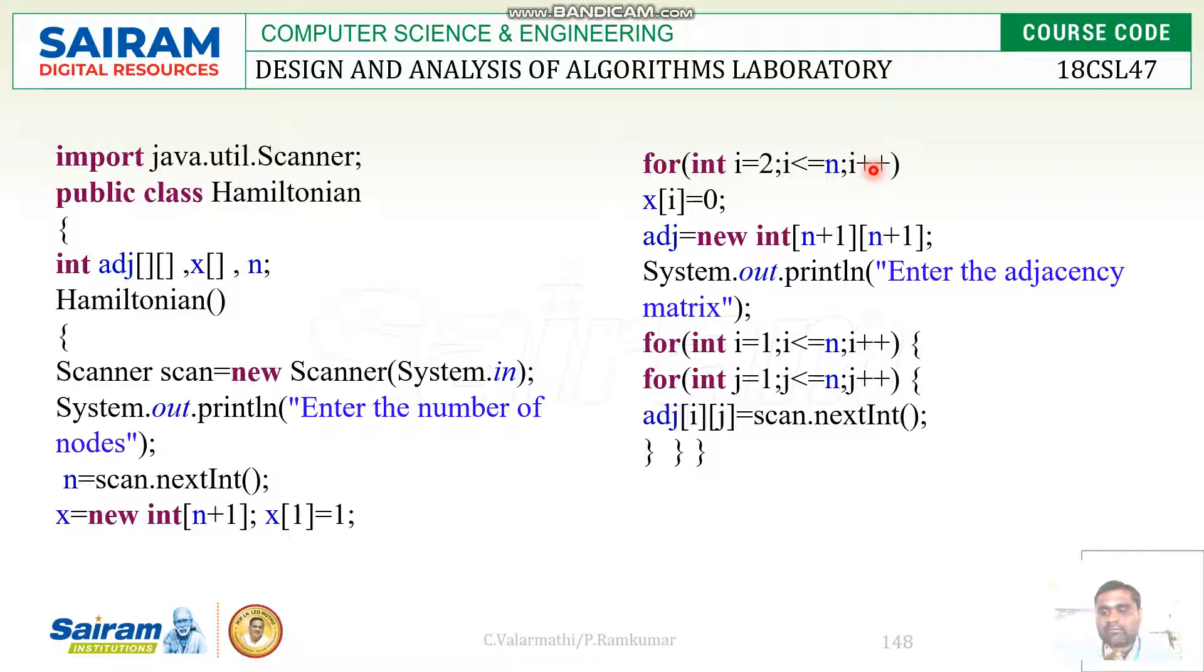If there is any edge with some weight between one vertex and another vertex, then in the corresponding rows and columns of an adjacency matrix, we have to write the corresponding value.